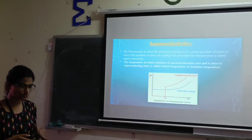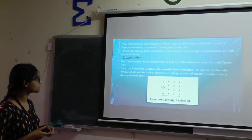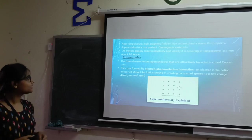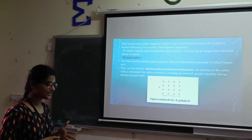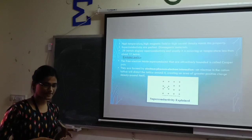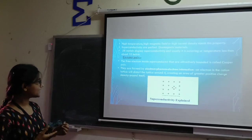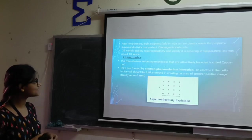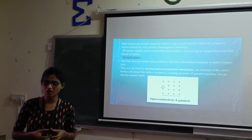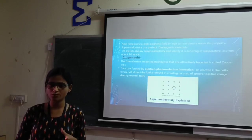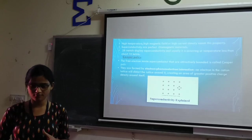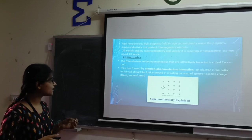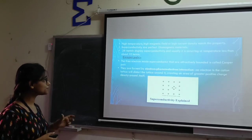This phenomenon is called superconductivity. The materials showing this effect are called superconductors. High temperature, high magnetic field, or high current density ends this property. Superconductors are perfect diamagnetic materials, that is, they are repelled by magnetic fields. Pure metals display superconductivity and usually it is occurring at temperatures less than about 10 Kelvin. The temperature which we need is very low, around 10 Kelvin or 20 Kelvin.